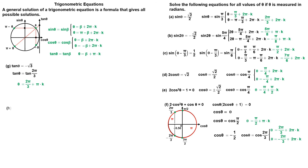Tangent of 2 times theta is equal to square root of 3. The reference angle is pi divided by 3 radians. Tangent is positive in quadrant 1 and quadrant 3. There are two points on the unit circle with tangent square root of 3: pi divided by 3 and 4 pi divided by 3. We can write tangent of 2 times theta is equal to tangent of pi divided by 3. The general solution is given as follows.